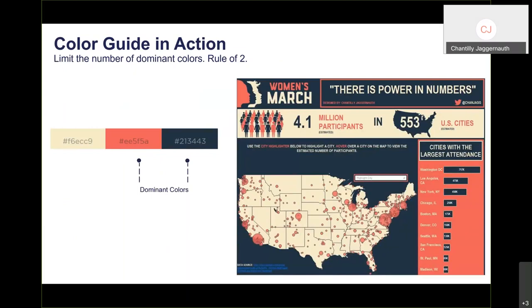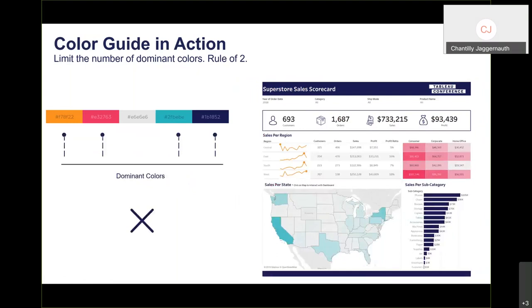When looking at a uniform metric throughout the dashboard — like a dashboard entirely about sales — make sure that metric is represented as the same color in every chart. Sales per month, sales per segment, sales per state — if everything is sales, don't use different colors to represent it. Keep color consistent for the same metric throughout the entire visualization.